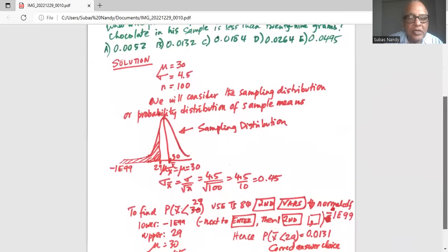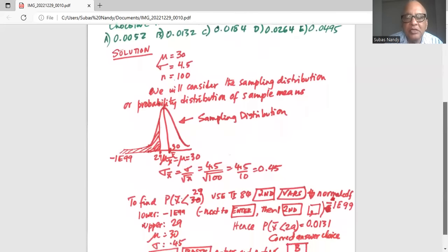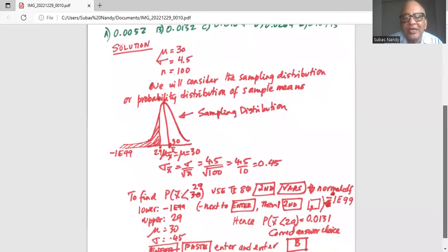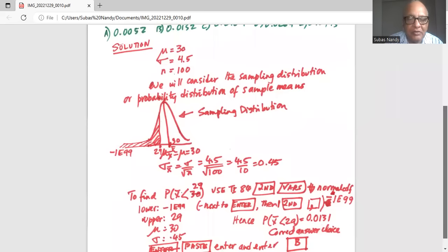To find the probability that x bar sample mean is less than 29, we will use TI-84. We will press the second key, then the verse key which is in the third row, and then scroll down to number 2, normal CDF and enter.